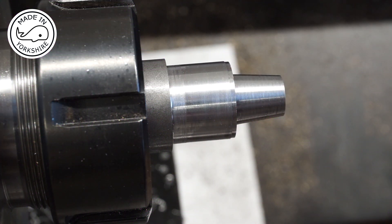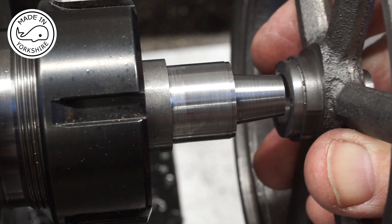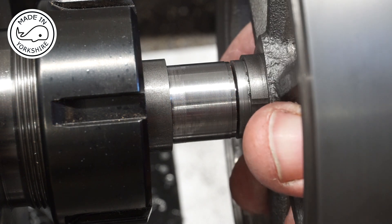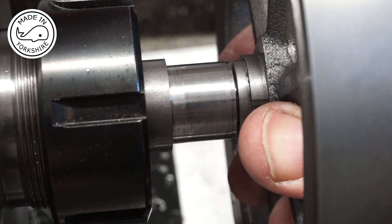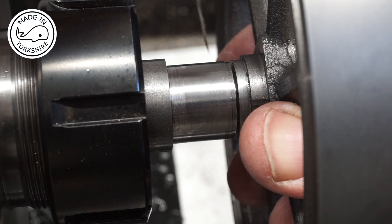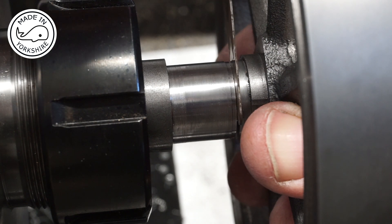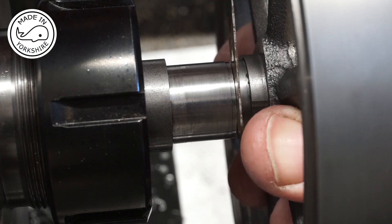So the idea is to take the taper down so that when the flywheel fits on it you've got a gap there of 25 thou and that looks spot on to me.